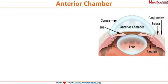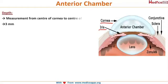Let's go deep into the eye and see our anterior chamber. What is the anterior chamber? It is the space present between the posterior surface of the cornea and the anterior surface of the iris.